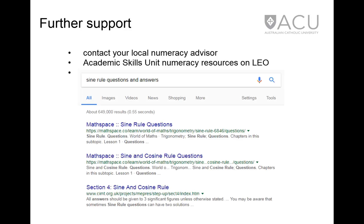For further support, contact your local Academic Skills Numeracy Advisor on your campus. You can access the Academic Skills Numeracy resources on LEO. You can also search the internet for exercises with solutions on the sine rule. In this particular example, there are 649,000 results, so there is no shortage of material to practice with. Thank you.